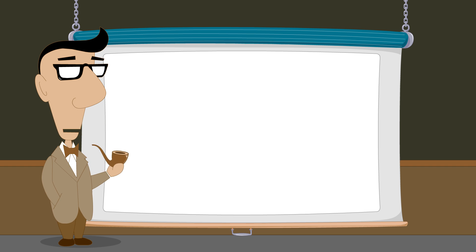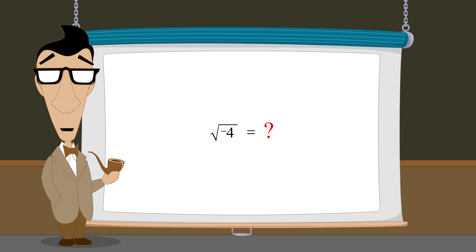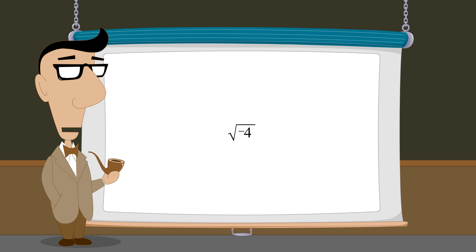As we have seen, this is because no real number exists that is the square root of a negative number. However, in the next lecture we will introduce an extension to the real number system that allows the square root of negative numbers to be represented. This extension is created by a mysterious new set of numbers called imaginary numbers.